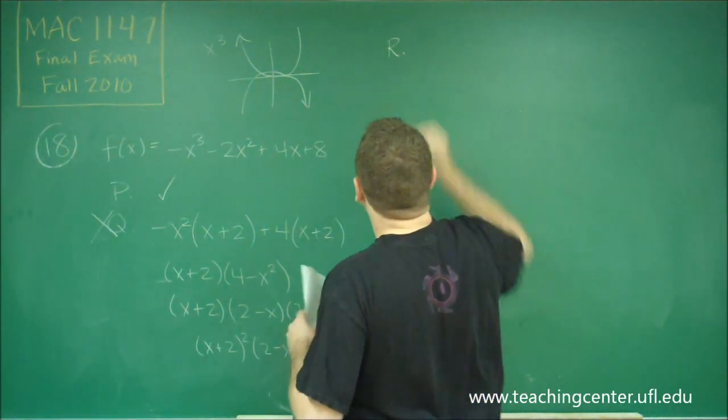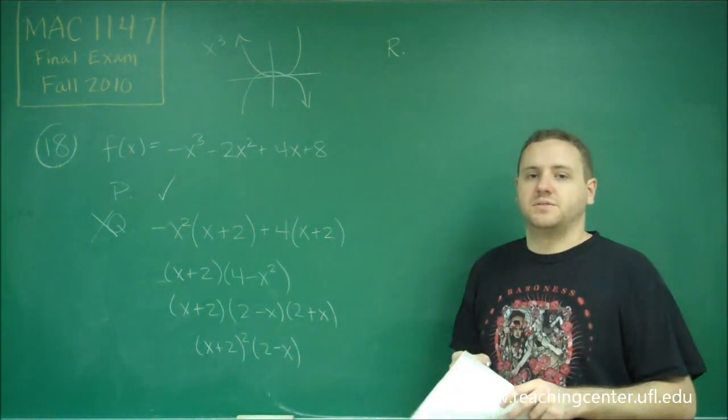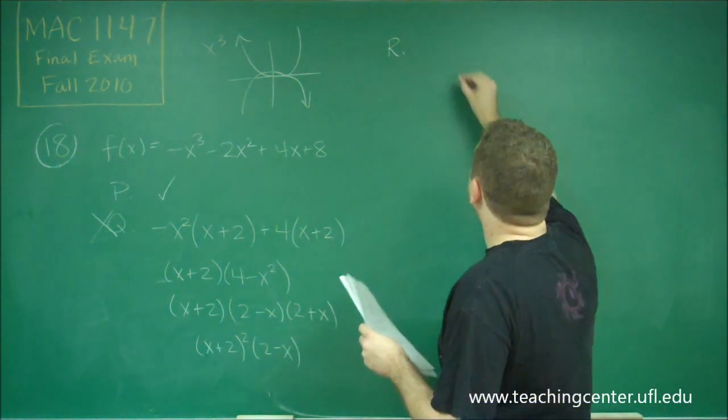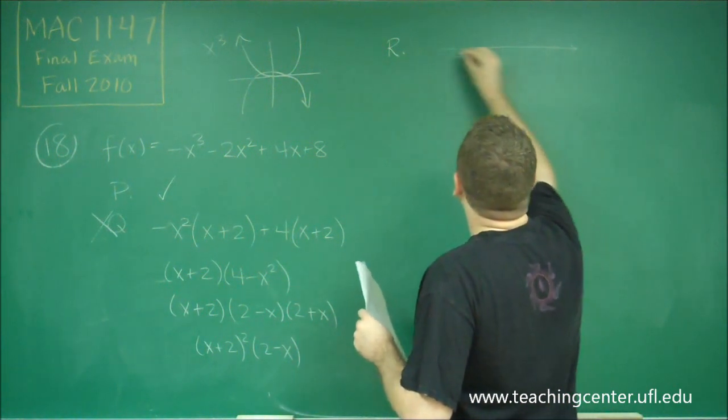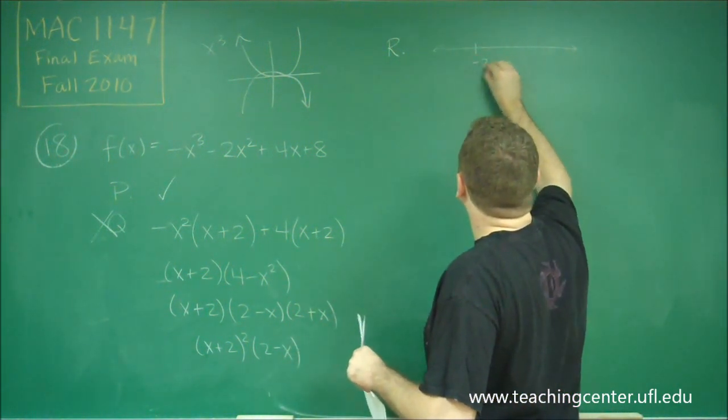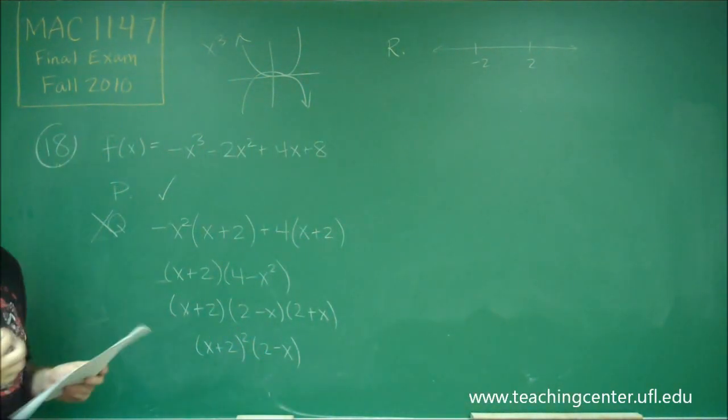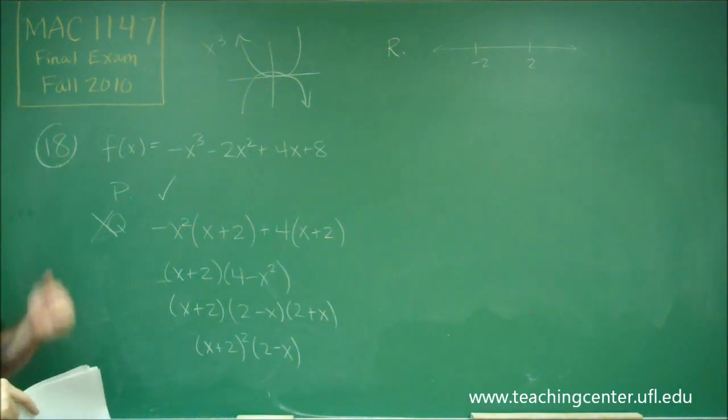And finally, statement R. Statement R says that it's above the x-axis on negative 2 to 2 only. So now let's do our number line. We know that our zeros are negative 2 and 2. So those are the only things we need to put on the number line.